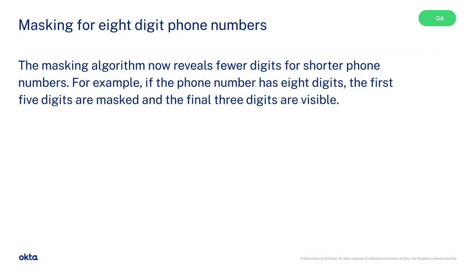The masking algorithm now reveals fewer digits for shorter phone numbers. For example, if the phone number has 8 digits, the first 5 digits are masked, and the final 3 digits are visible.